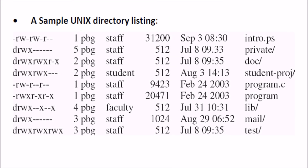This is a simple Unix directory listing. For example, looking at the first entry — rwrwr — this represents read, write, and execute permissions. These indicate what is allowed for different users such as staff, faculty, and students, and what access is being provided to each.